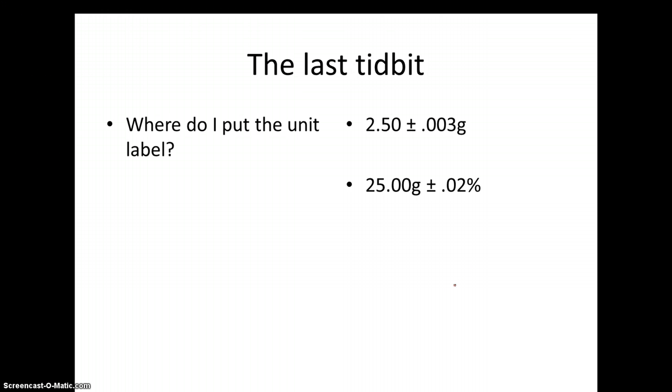One last tidbit to talk about: where do we put the unit label? There's still a little debate about where the right spot should be. Typically what I prefer is if I've got an absolute measurement, I'm going to save that unit for the end, after all of it, because it rolls off the tongue well: 2.50 plus or minus 0.003 grams. If I have both a unit label and a percentage, I typically put the unit label with the first value and the percentage after the uncertainty: 25.00 grams plus or minus 0.02 percent. There's a little debate among teachers and professors about this.